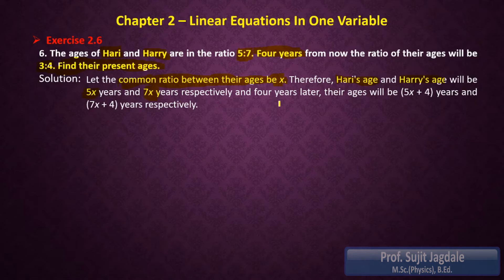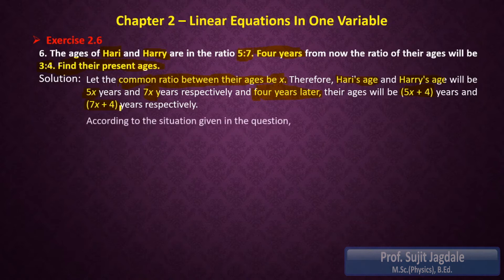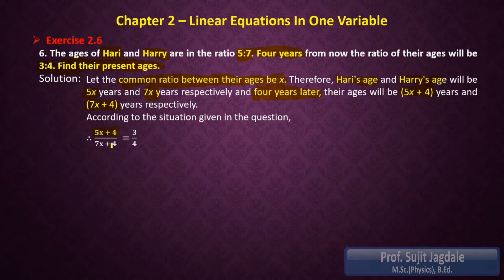Since x is the common ratio, 5 times x is 5x and 7 times x is 7x respectively. Four years later we add 4 to both ages: 5x plus 4 is the age of the first person and 7x plus 4 is the age of the second person. Now their ratio is 3 is to 4, so we write (5x + 4) divided by (7x + 4) equals 3 upon 4.